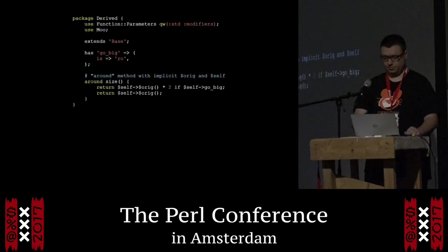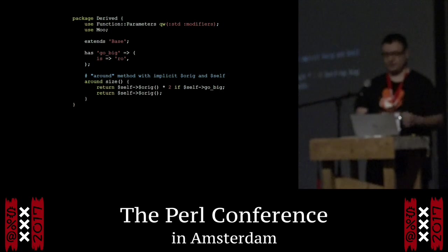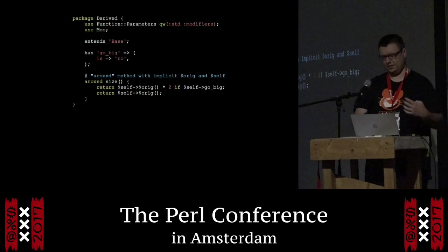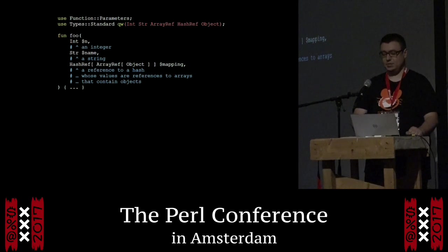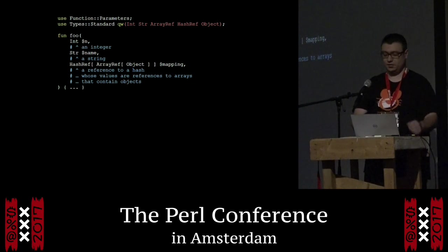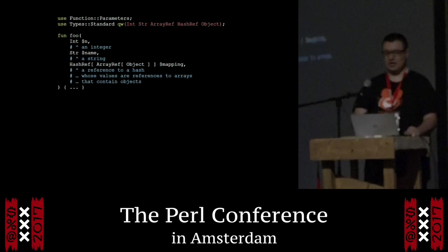Here's a slightly more unusual example — this uses Moo. You can import modifiers. You can implement an 'around' method, which in addition to $self gives you an implicit $orig, a reference to the original method the user was trying to call. You also get 'before' and 'after' and that stuff. And you get types. Function::Parameters doesn't implement its own type system — it just uses what is in scope. For example, you can load Type::Standard with all the names there, and you can declare the parameter to be an integer, string, or a reference to a hash. If you don't use Type::Standard but instead use MooseX::Types, it works exactly the same way.